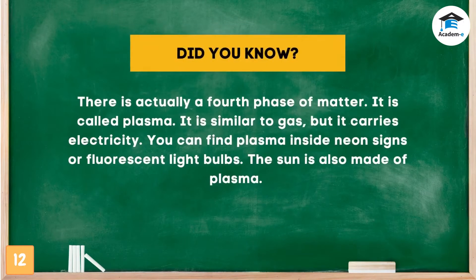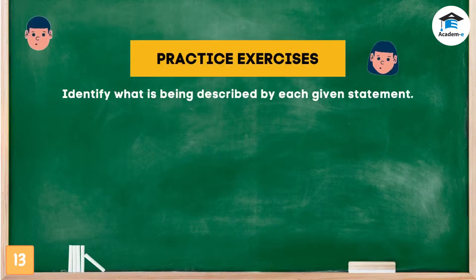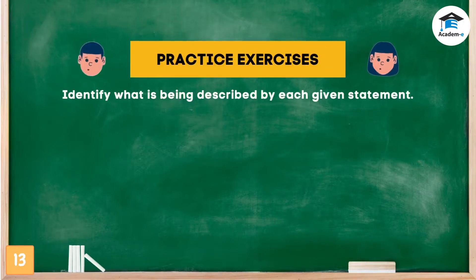There is actually a fourth phase of matter — it is called plasma. It is similar to gas but it carries electricity. You can find plasma inside neon signs and fluorescent light bulbs. The sun is also made of plasma. To check how well you understood the lesson, let us have a short exercise.